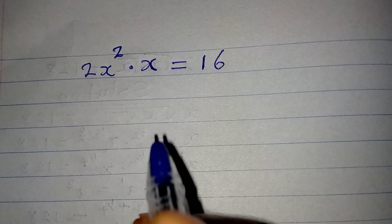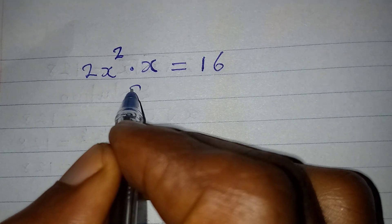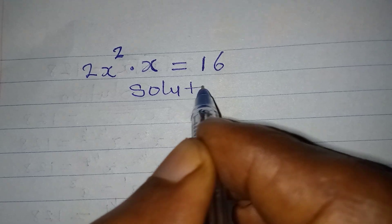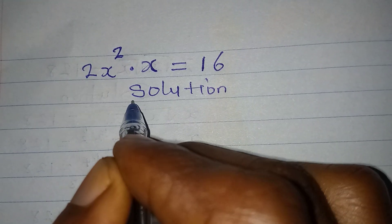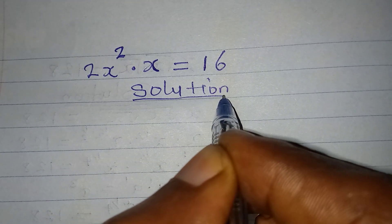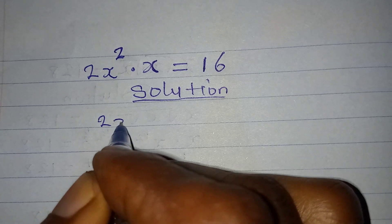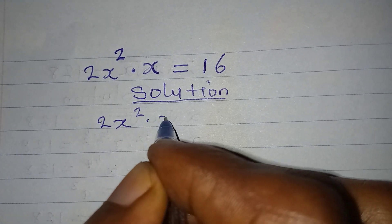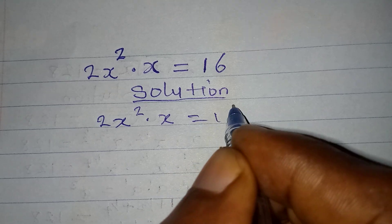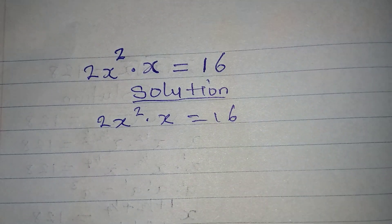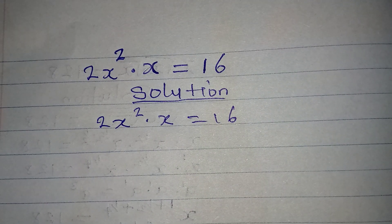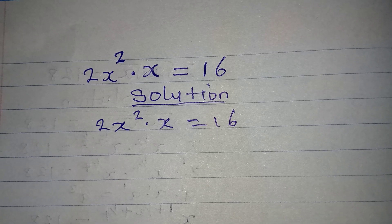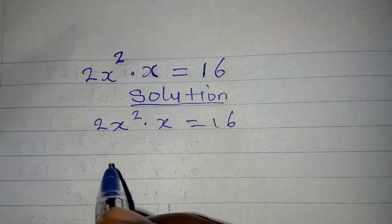Hello everyone. Let's solve this equation completely, meaning we should bring out all the factors and all the solutions. This will be equal to 16. The first thing we would do is to multiply.